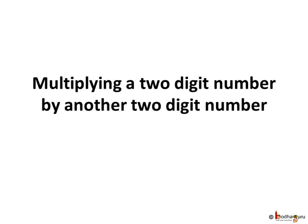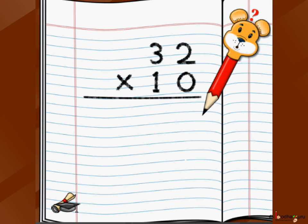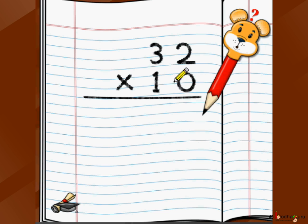Hello children! In this video we are going to learn how to do multiplication of a two-digit number by another two-digit number. Let's take an example — let's say we would like to multiply 32 by 10. Just like we saw in the last video, we write 32 multiplied by 10. In the last video we were multiplying by a single-digit number; in this video we are going to multiply by a two-digit number. 10 is a two-digit number.